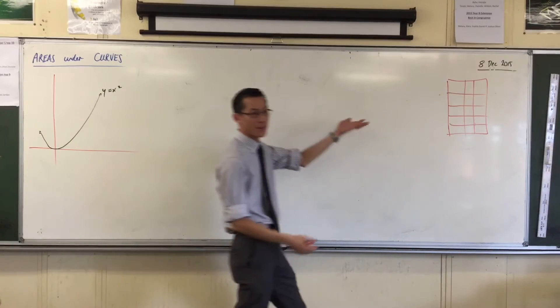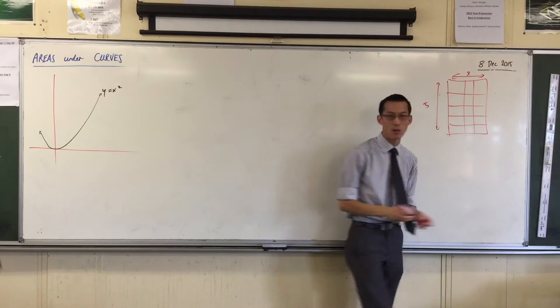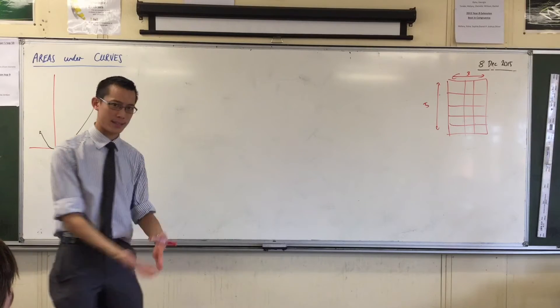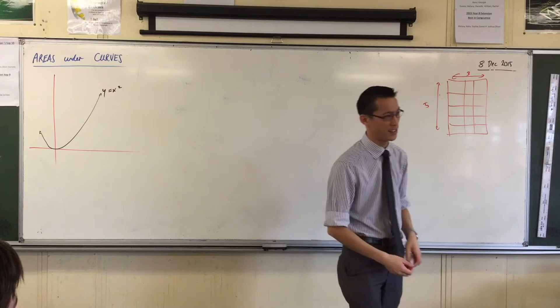Because you take a shape which is 3 by 5, and then all you need to do is turn it on its side, and you have 5 times 3. But it's the same shape. So area is something we begin with very, very early on.